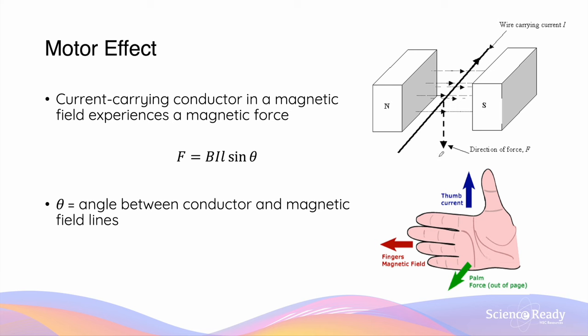If you apply the right-hand palm rule on this example, where the current is going away from us and the magnetic field is going from the north pole to the south pole, you will find that the force of the motor effect will be acting downwards.